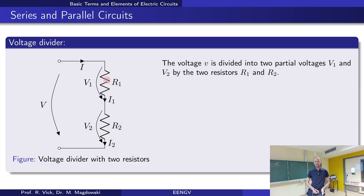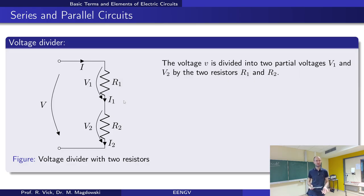We could take the sum of the two resistors as the equivalent resistance, divide the total voltage by that to get the current, then multiply current by the individual resistance to get the individual voltage drop. This works, but we have to calculate the current first. The idea of the voltage divider rule is to have an equation that gives us the partial voltages without calculating the current first.